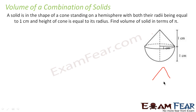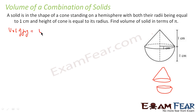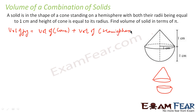We can break this figure into two parts: one part is the cone and one part is the hemisphere. So we can say that volume of figure is equal to volume of cone plus volume of hemisphere. Volume of cone is (1/3)πr²h and volume of hemisphere is (2/3)πr³. These are the formulas we know.